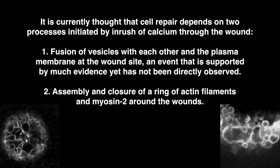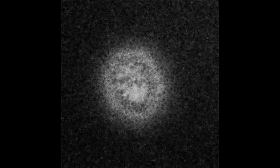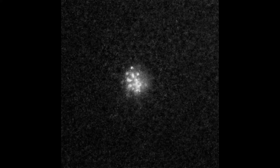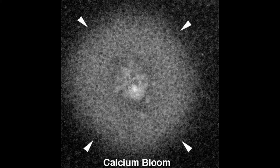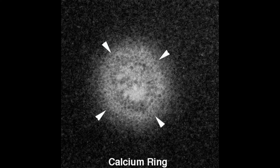We will start by watching calcium. In this movie, the cells are filmed from above, providing a surface view of healing. If we slow the movie down, we can see some features of the calcium response: a bloom of increased calcium that extends far beyond the wound, a region of very high calcium in the center of the wounded area, and then a bit later, a ring of elevated calcium that closes inward.